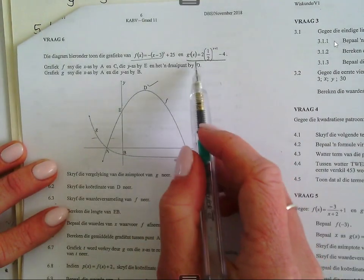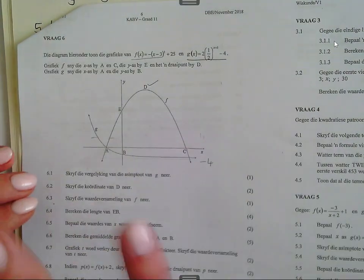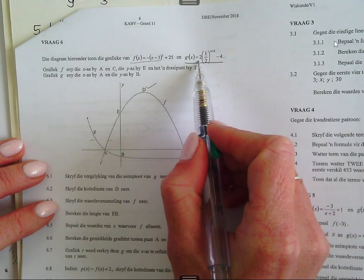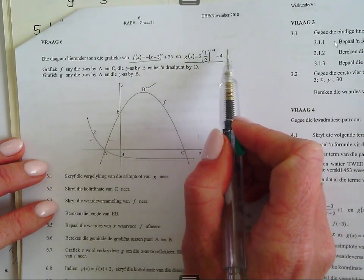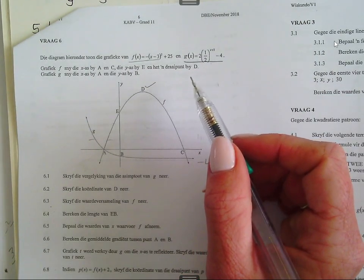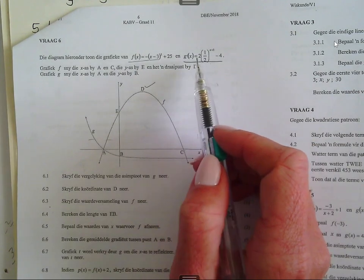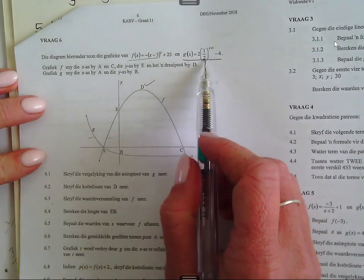Dan as ons kyk na die exponentiële funksie, pas sy vorm by sy vergelyking, sê gaf my. So hy is 2 mal 1 half to die maag x plus 1. Hy pas ons daarby want die basis, die grondtal is half. So waar hy nie waar A nie, A sê net vir ons is hy boom of onderom, maar die basis sê vir ons is hy steingend of is hy dalen. So hy is daar so.